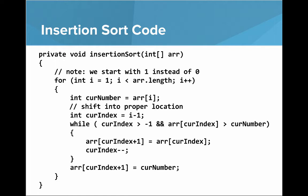So what does insertion sort code look like? We loop from i equals one, i is less than array dot length, i plus plus. We start with one instead of zero because that first element is sorted with respect to itself. We get the current number, and then we shift it into the proper location using a while loop — shifting all the other elements up — and then place it in its correct position with arr at current index plus one equals current number.